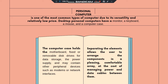Desktop personal computers have a monitor, a keyboard, mouse, and computer case. The computer case holds the motherboard, fixed or removable disk drives for data storage, the power supply, and may contain other peripheral devices such as modems or network interfaces. Separating the elements allows the user to arrange the components in a pleasing, comfortable array at the cost of managing power and data cables between them.